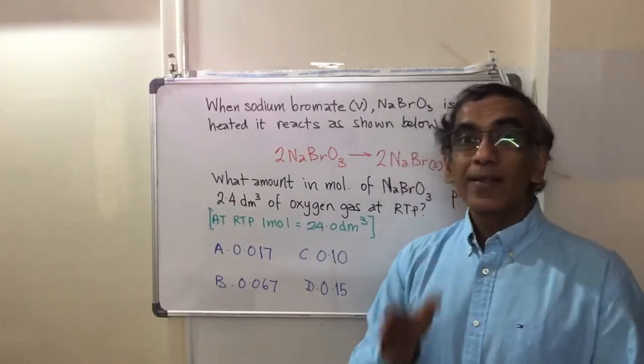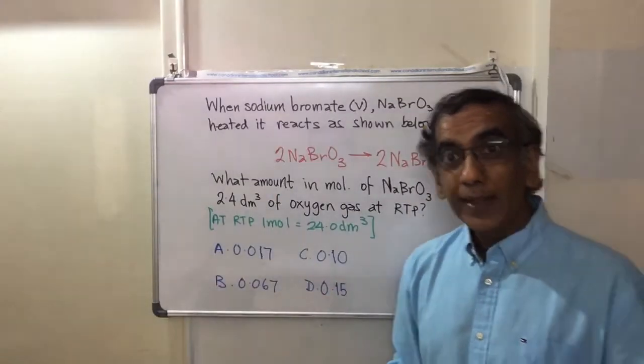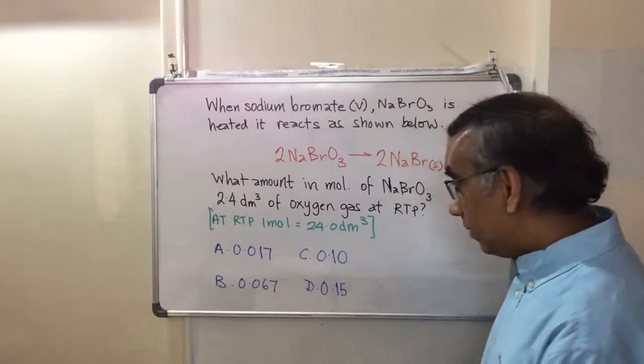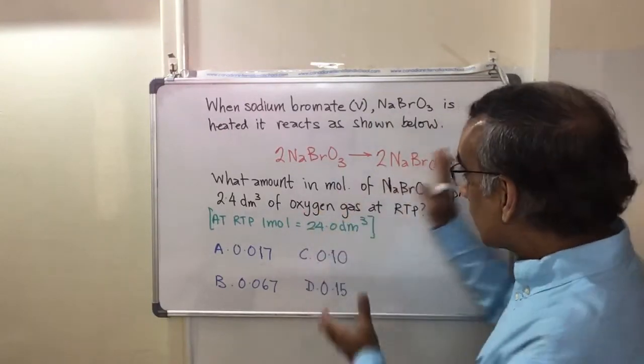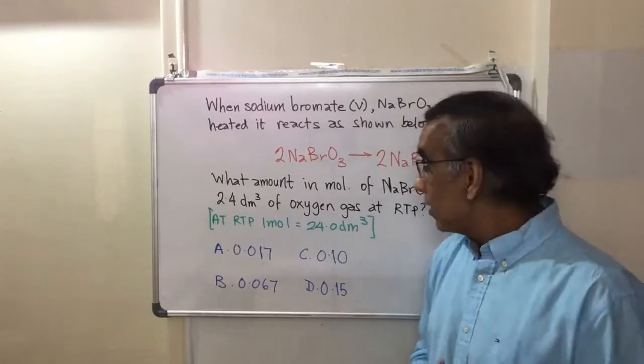Bearing in mind also that this is a multiple choice item. And in IB chemistry, you are not allowed a calculator in the multiple choice exam. So it means that whatever mathematics you have to solve in this question can be done, should be done, without a calculator.